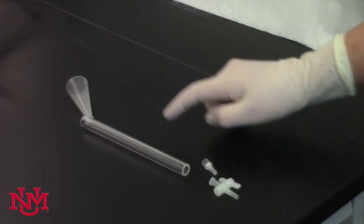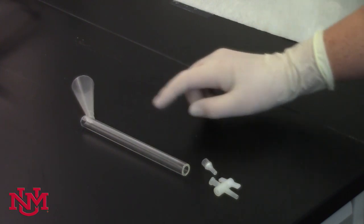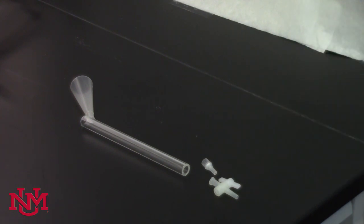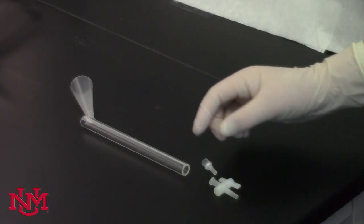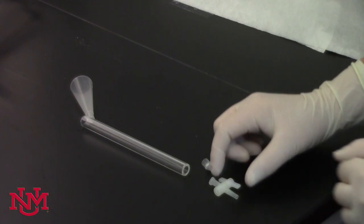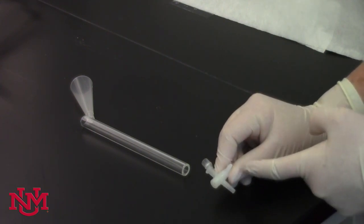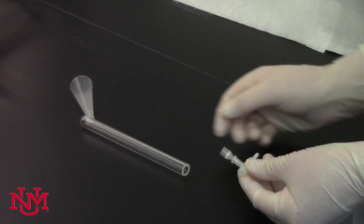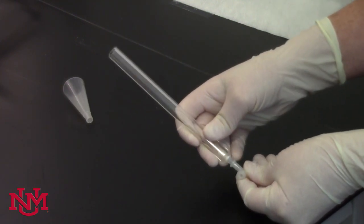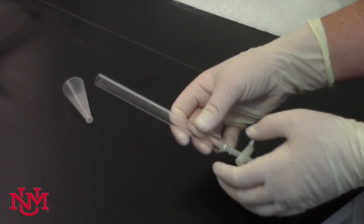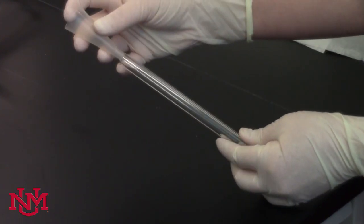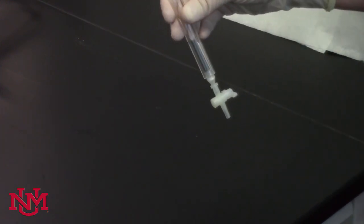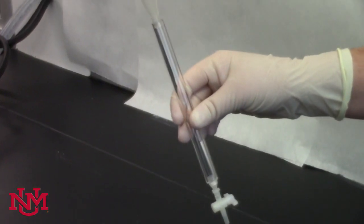You will need your column, column funnel, lure tip, and column stopcock. They're pretty delicate plastic pieces that have to fit in a certain order. The stopcock should be closed at a 90-degree angle and the lure tip fits into the top. That fits into the bottom of the column. Sometimes it gets stuck. The column funnel fits into the top. Once you have all these pieces assembled, you have the column chromatography column set up.